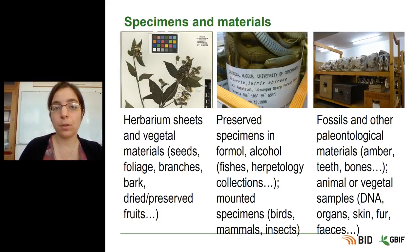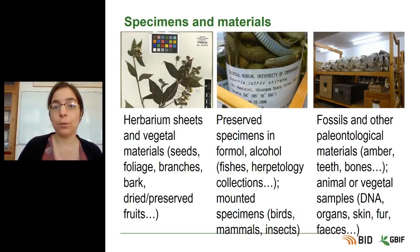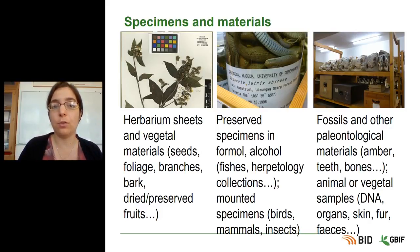This is important because you may have some samples that you are not aware of, such as DNA, organs, skin, furs, and feces. So it can be really useful for you to talk to your colleagues and see what kind of specimens and natural history collection materials you can gather in your institution.